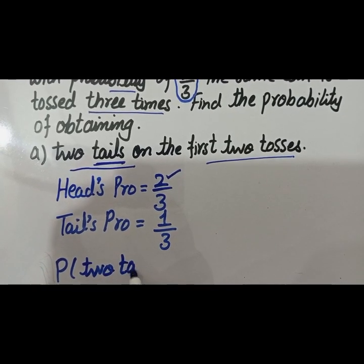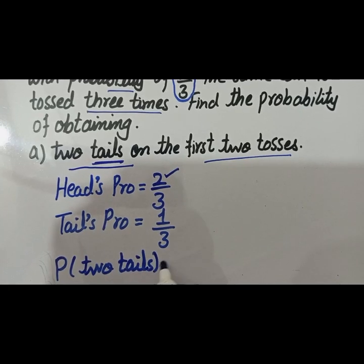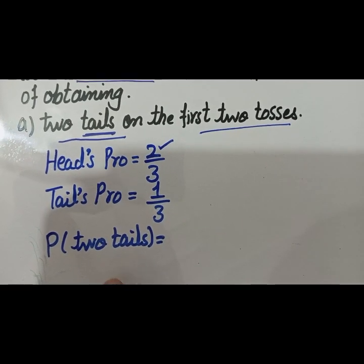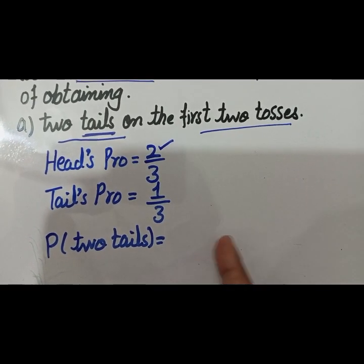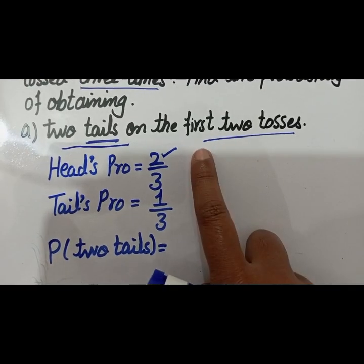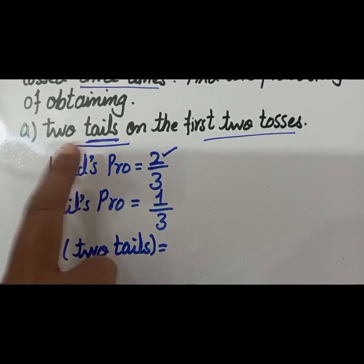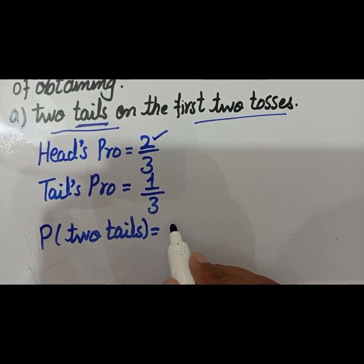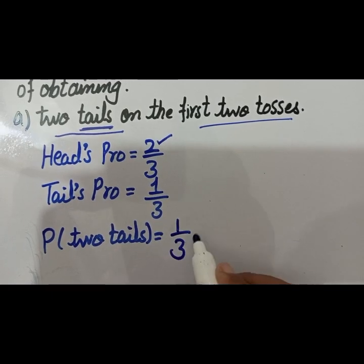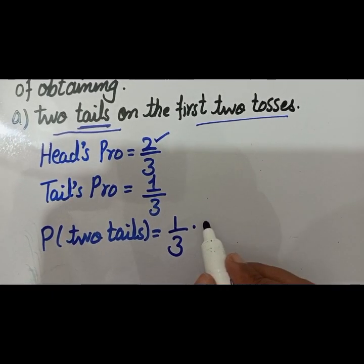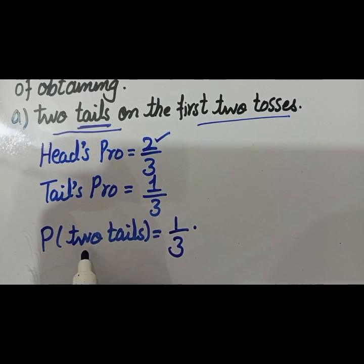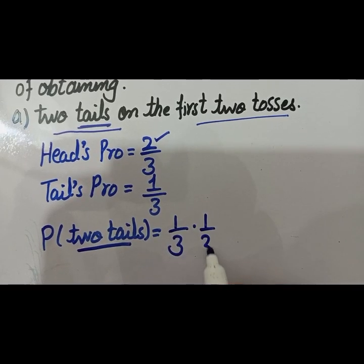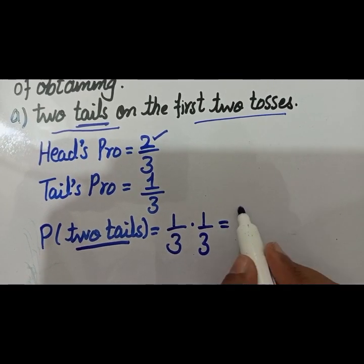Now find the probability of two tails. In the first flip you have to get a tail, and in the second flip you also need a tail, because he is asking for tails on the first two tosses. So the probability of tail on the first toss is 1 by 3, and the probability of tail on the second toss is also 1 by 3. Multiplying these gives the answer: 1 by 9.